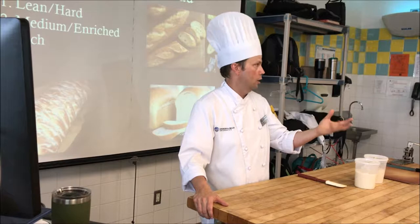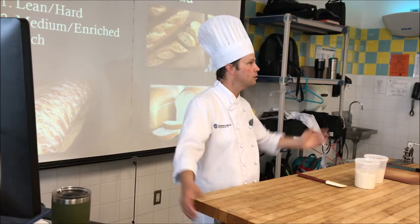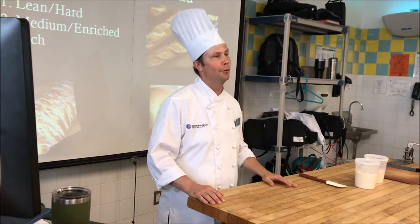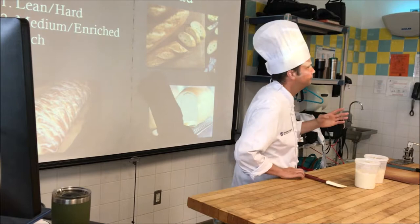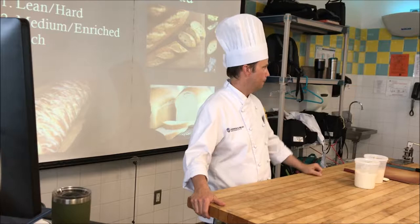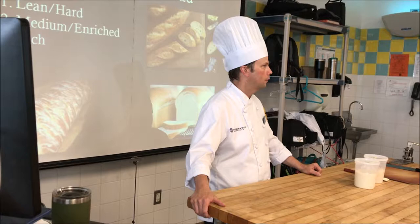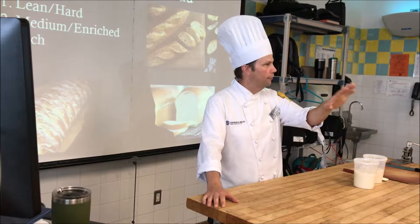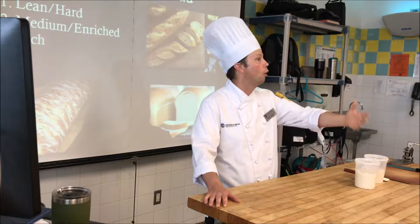Think of it like hamburgers — one hamburger makes you happy, but fifteen is too much. A lean dough, like French bread, contains just the four pillars: salt, water, yeast, and flour, with maybe a little oil. What we made today are pretty much lean doughs, though we did add an enrichment. The original recipe is just the four pillars plus a little bit of oil.